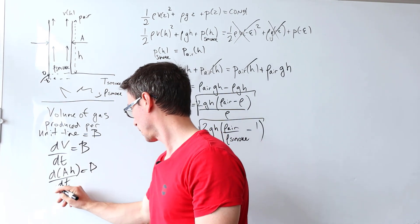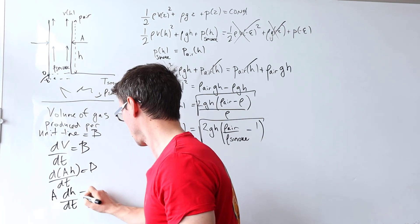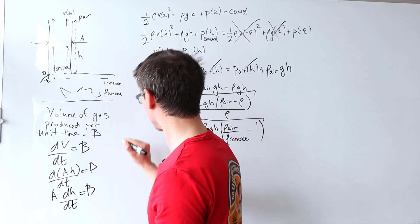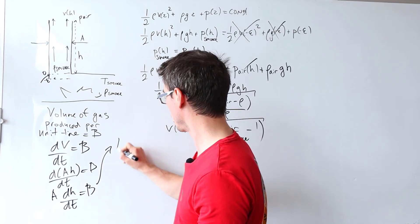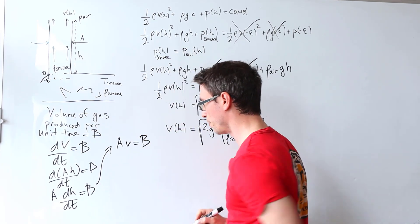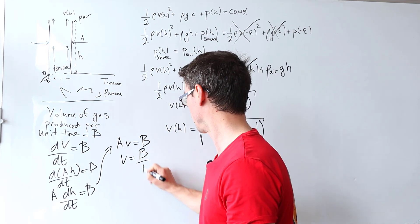Now let's take the constant area out, so what we get is dh/dt is equal to b over a, and this here is just the vertical speed. So we know that a times the speed v is equal to b, meaning of course that v is just b over a.